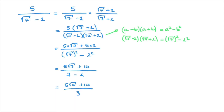That's equal to 5 root 7 plus 10 over 7 minus 4. Finally, we can state that this equals 5 root 7 plus 10 over 3, and we're done. We've just rationalized the denominator. And so that's how to rationalize any expression in which the denominator can be written as a plus or minus the square root of b. I really hope that helped, and if it did please hit like on this video and subscribe to our channel. I'll see you soon.